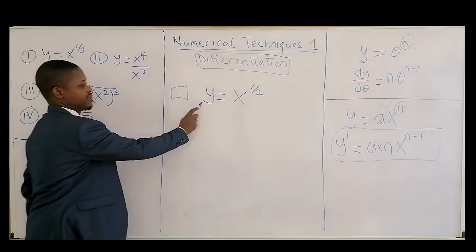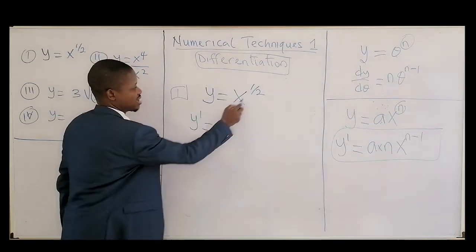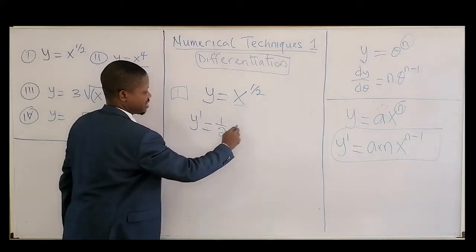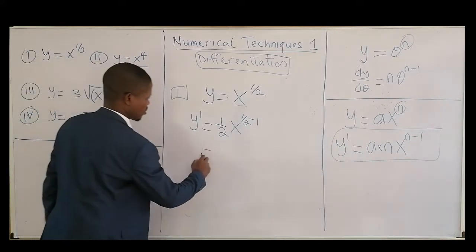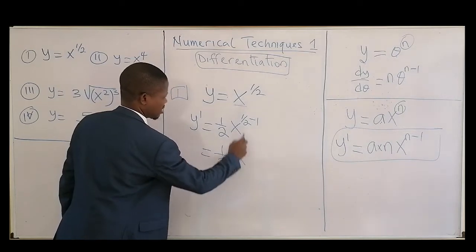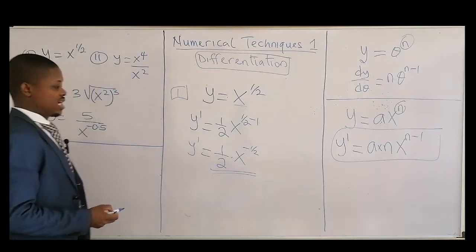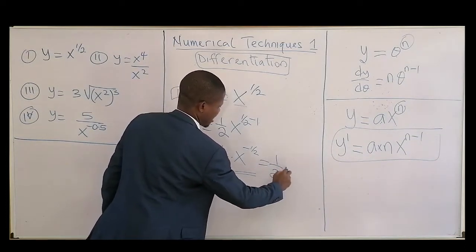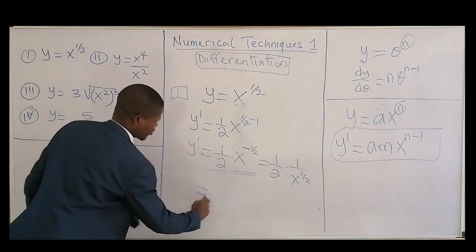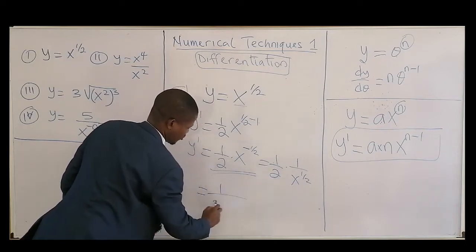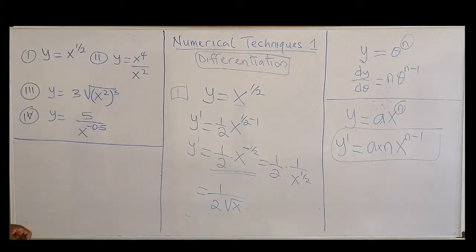y is a function of x. For dy/dx, the power (which is 1/2) will come to the front, then write the base again, and the power becomes 1/2 minus 1, which is minus 1/2. Doing the algebra: (1/2) times x^(−1/2) equals 1 over (2 times x^(1/2)), which is 1 over the square root of x. That finishes question one.